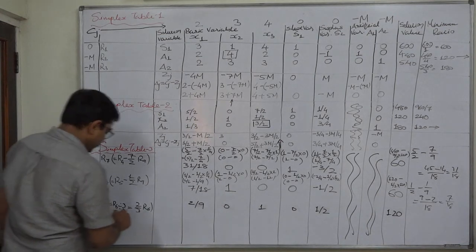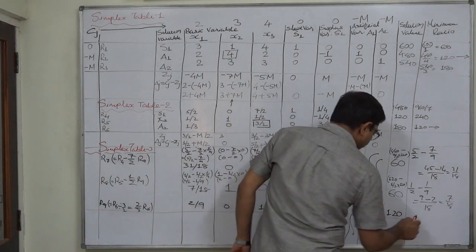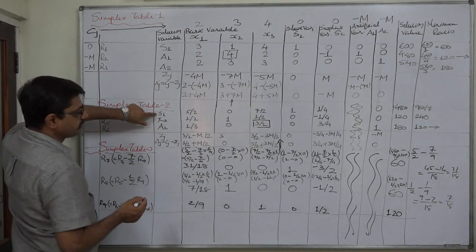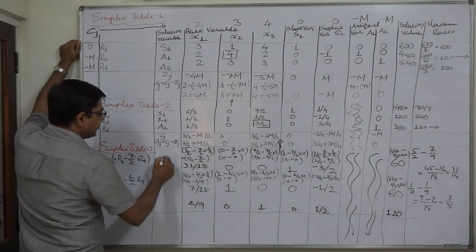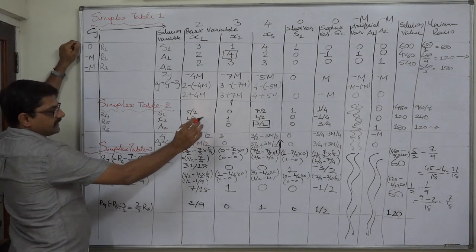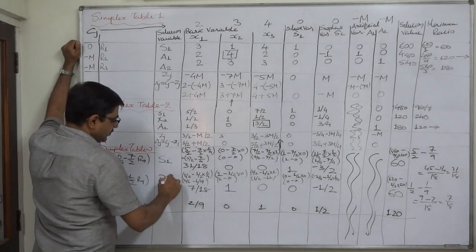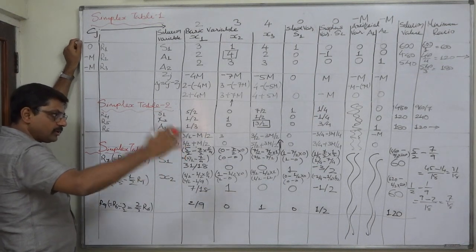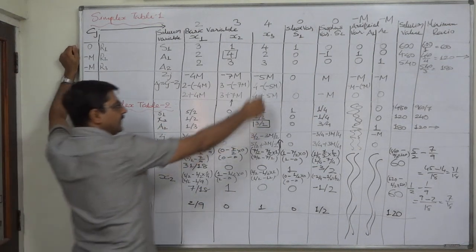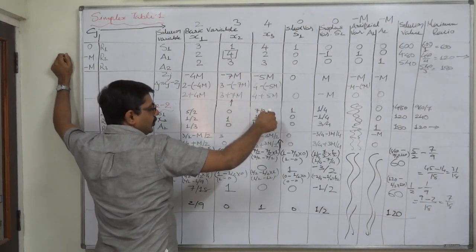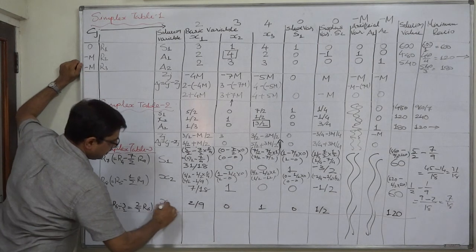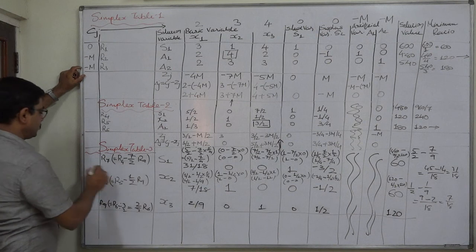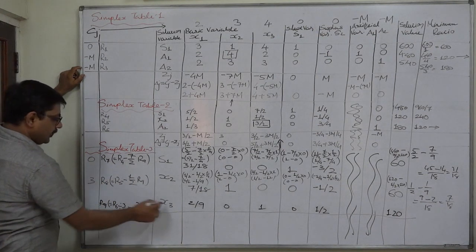Now it is the turn of Zj, but before writing Zj we have to write the variables. The first row has no change because it was not selected as the key row. The second row was also not selected, so the variable remains x2. A2 is dropped as the outgoing variable and in its place, the key column element x3 enters.